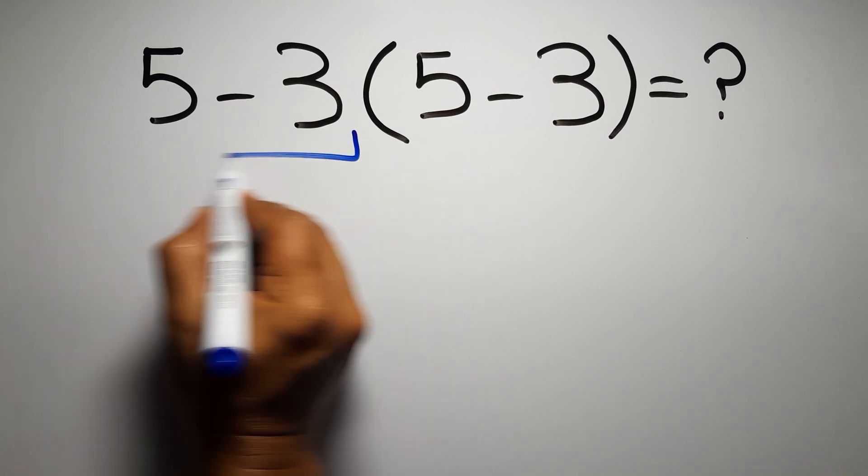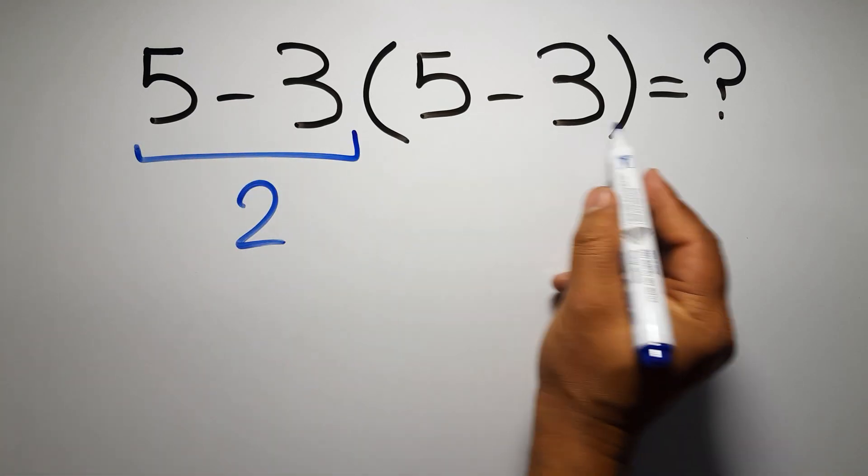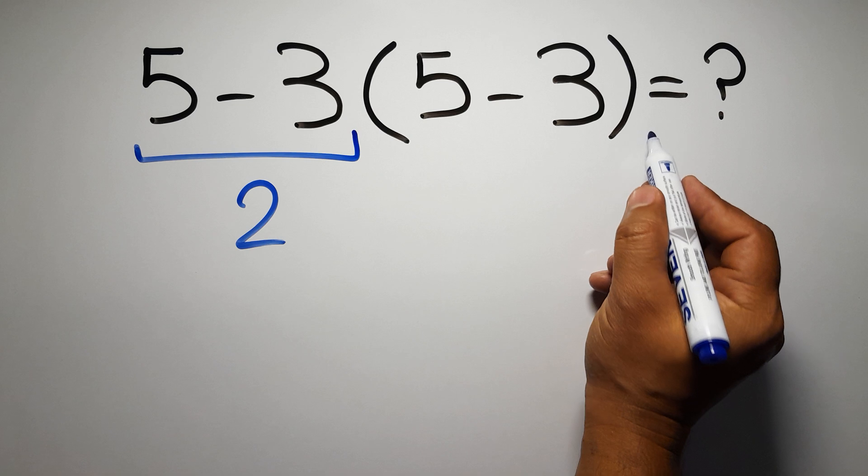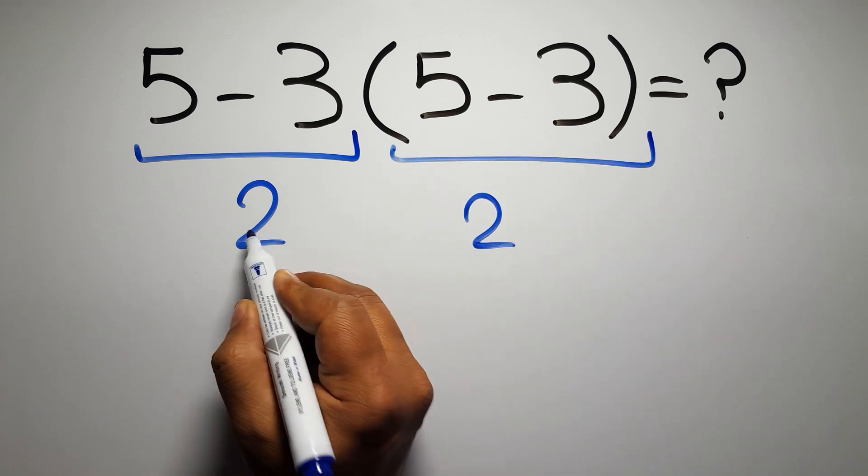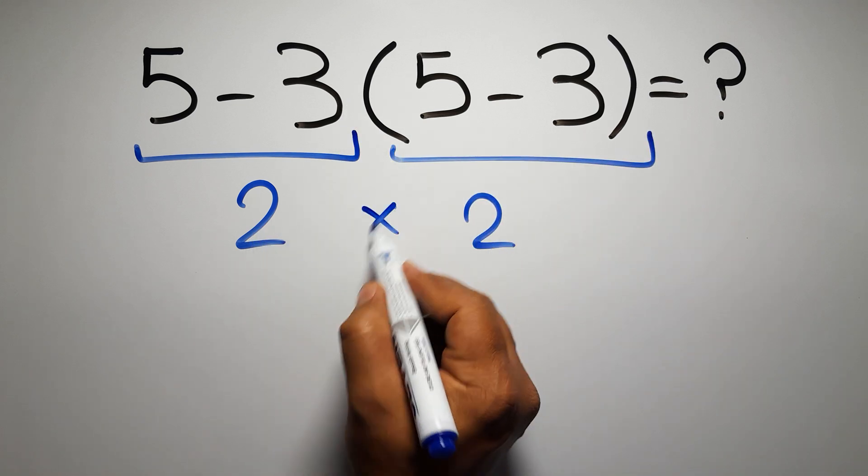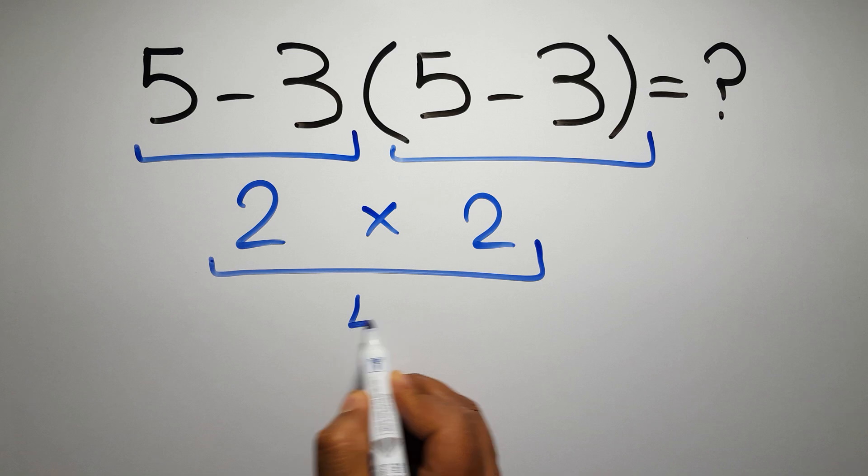5 minus 3 gives us 2, and again here we have 5 minus 3, so 2 times 2 gives us 4. But this answer is not correct, because according to the order of operations...